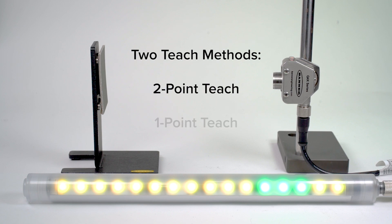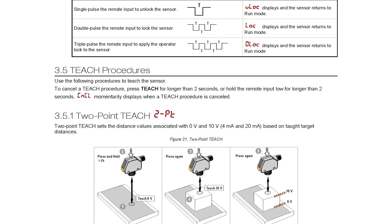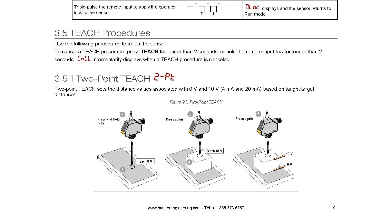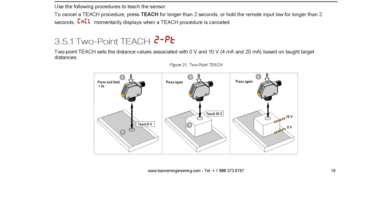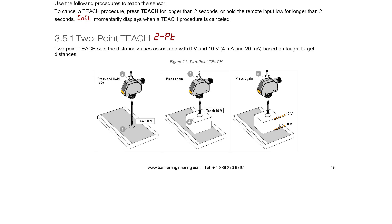two-point teach and one-point teach. The two-point teach method allows you to manually set the high and low values of the output signal by teaching each one to its corresponding distance.